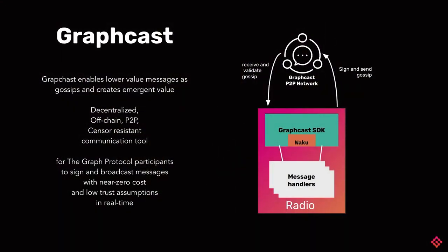GraphCast enables those lower-value messages to be communicated with the rest of the network participants. It creates emergent value for building this community of participants. It is decentralized, off-chain communication. It is P2P and also censorship resistant. It is built very focused on the graph protocol participants to sign and broadcast messages with near zero cost, low trust assumptions, and in real time.